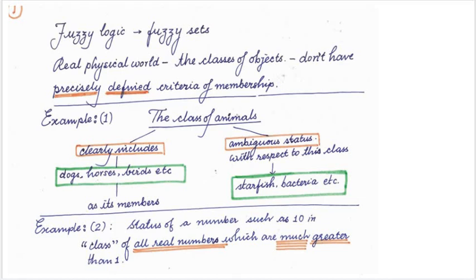First of all, let us see the classes of objects which we find in the real physical world. Then we will see that the classes of objects in the real physical world more often don't have precisely defined criteria of membership. Now we need to explore what we mean by they don't have precisely defined criteria of membership. So for that we can see one example.